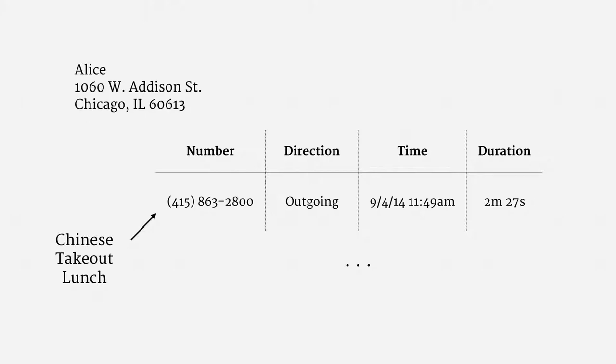We're going to revisit the sensitivity of call records in the context of National Security Agency surveillance. You might hear these records referred to as local usage details, or LUDs. They are also sometimes referred to as call detail records, or CDRs. Both mean the same thing — a list of calls.